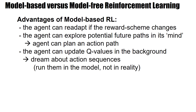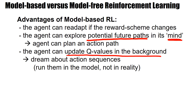This means the agent can also explore potential future paths in its mind — it can play through potential futures without actually performing the action, and therefore plan an action path. Moreover, once it has found the reward again after a switch in reward location, it can update the Q-values in the background. The Bellman equation implements a consistency condition between Q-values at different states, so you can dream about action sequences, run them in the model — not in reality — and use this to implement the consistency condition.